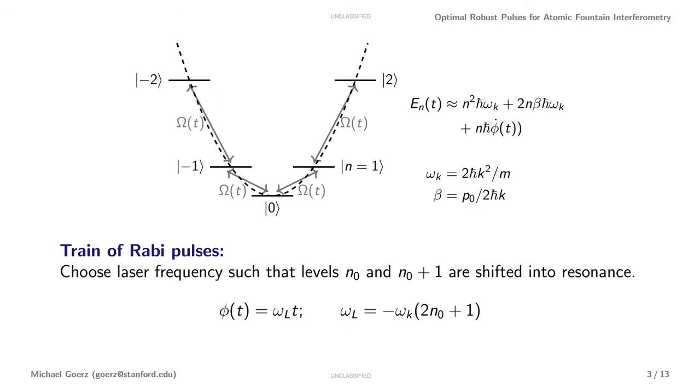The easiest way to manipulate this momentum ladder is to apply a sequence of Rabi pulses. So to move from level 0 to level 1, you choose a fixed frequency that matches exactly this transition. And then to move from 1 to 2, you change the frequency to match. And in this way you can move around the momentum ladder freely.